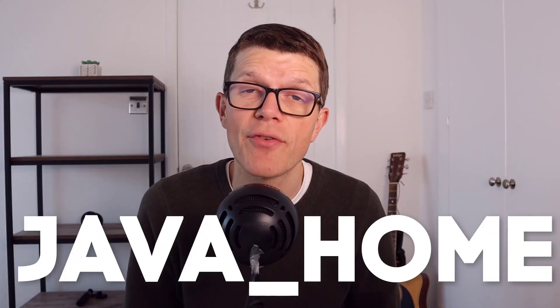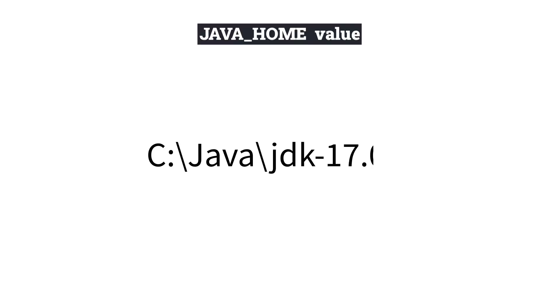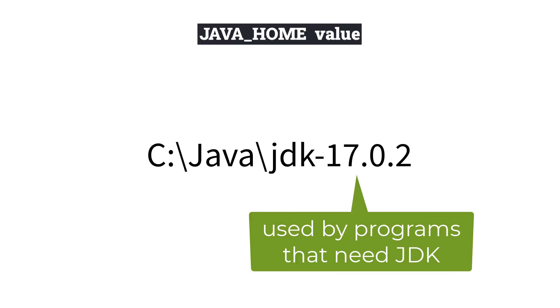So PATH is all about allowing us to run Java from the command line really easily by name. But why do we need the JAVA_HOME environment variable as well? JAVA_HOME is a variable that's set to the JDK installation directory, and it's used by any programs that need access to the JDK.